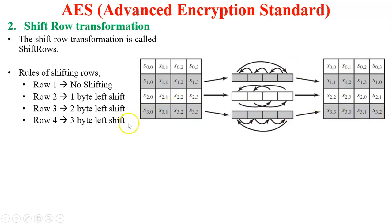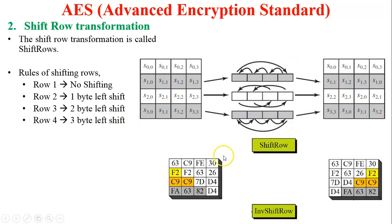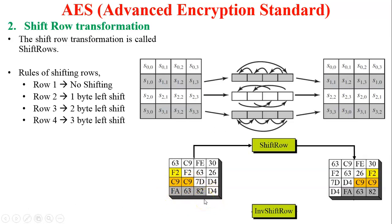Now here is a numeric example. You can see the given matrix and the shifting of rows applied to it. The first row remains as it is. In the second row, the yellow-marked value f2 moves to the last position with the remaining bytes shifted left — this is a one-byte left circular shift. The third row undergoes a two-byte left shift, and the last row undergoes a three-byte left circular shift.